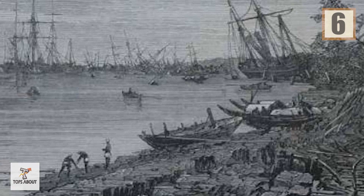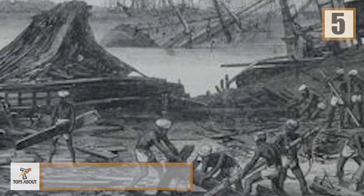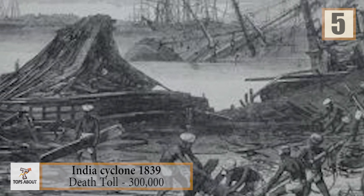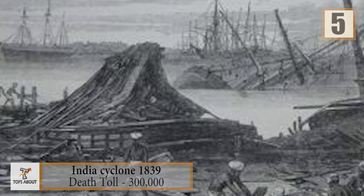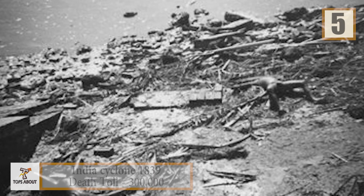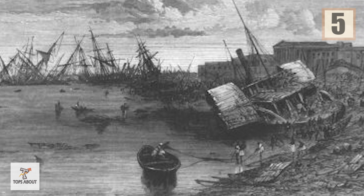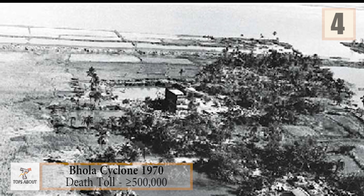Number 5: 1839 Koringa Cyclone. On November 25, 1839, an enormous cyclone caused a 40-foot storm surge that hit Koringa in Andhra Pradesh, wiped out the harbor city, destroyed vessels in its bay, and killed 300,000 people. Survivors never entirely rebuilt the city.